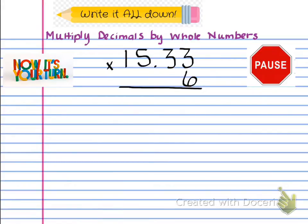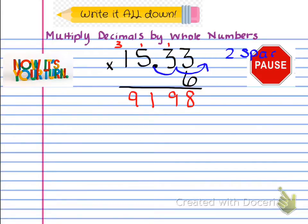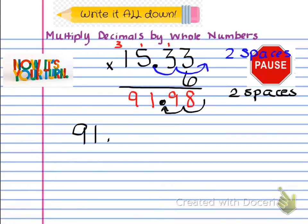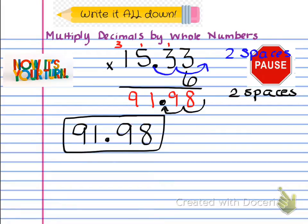Let's go ahead and look at what you got for the math. 6 times 3 is 18, carry the 1; 6 times 3 is 18 plus 1 is 19, carry the 1; 6 times 5 is 30 plus 1 is 31, carry the 3; and 6 times 1 is 6 plus 3 is 9. So you have 9, 1, 9, 8. We've completed step one. The next step is to swoop the decimal places out from our factor 15.33 — that's 2 spaces. Then you swoop back in 2 spaces. So your final answer for this problem is 91.98. Go ahead and write that and put a box around it.